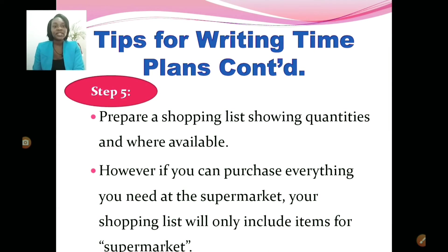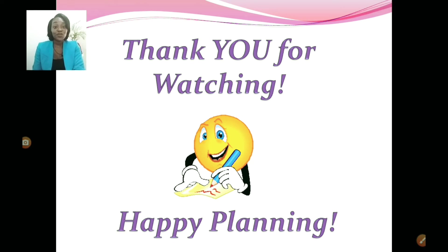Step five: prepare a shopping list showing quantities and where items are available. If you can purchase everything at the supermarket, your shopping list will only include items from there. I will now show you a sample of what the time plan sheet looks like.